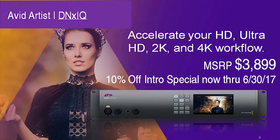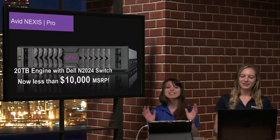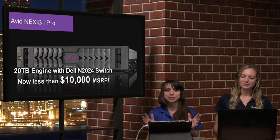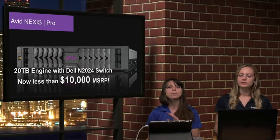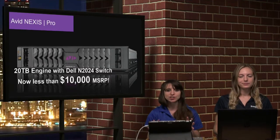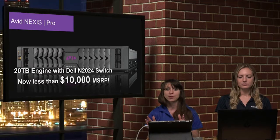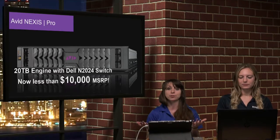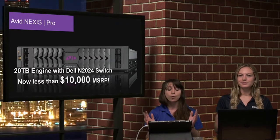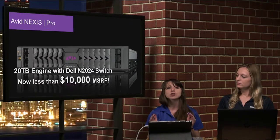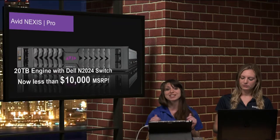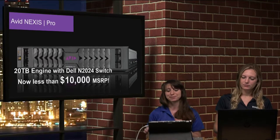Avid Nexis Pro is a great machine for collaborators. You get to work on one project from multiple workstations, all together at the same time — simultaneous workflow from different locations. We pair the 20-terabyte engine with a Dell N2024 switch for less than $10,000. That's a steal.